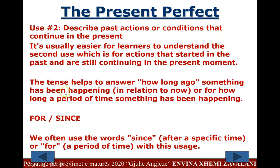Use 2: describe past actions or conditions that continue in the present. It's usually easier for learners to understand the second use, which is for actions that started in the past and are still continuing in the present moment. The tense helps to answer how long ago something has been happening in relation to now, or for how long a period of time something has been happening.